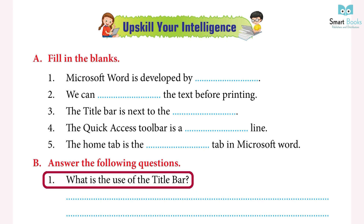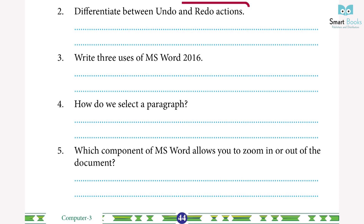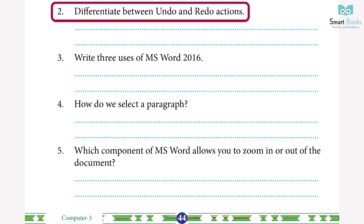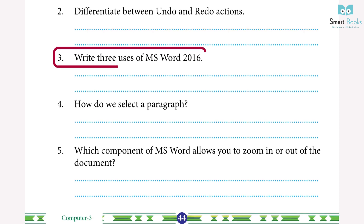Answer the following questions: one, what is the use of the title bar? The title bar is next to the Quick Access Toolbar; it shows the name of the document which is opened. By default, the name of any new document is Document 1. Two, differentiate between undo and redo: Undo erases the last change to the document reverting it to an older state; Redo restores what was just undone.